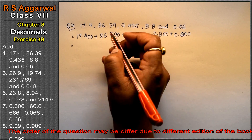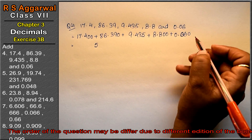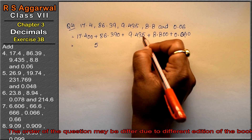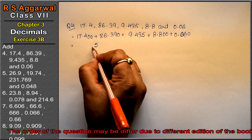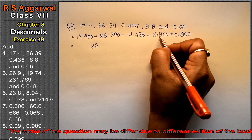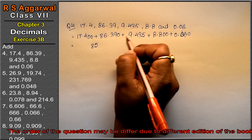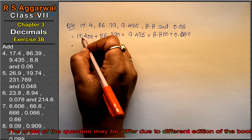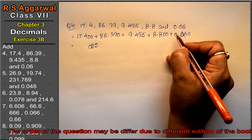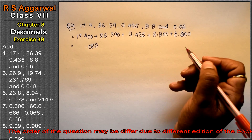Adding the thousandths column: 0, 0, 5. Then the hundredths: 6 and 3 is 9; 9 and 9 is 18, carry 1. Then: 9, 10, 11, 12, 13, 16. 16 and 4 is 20, carry 2. Point placed.